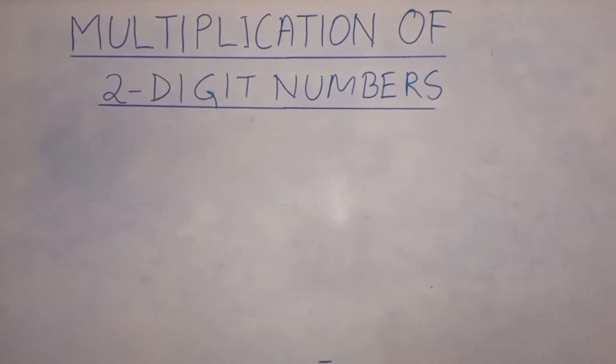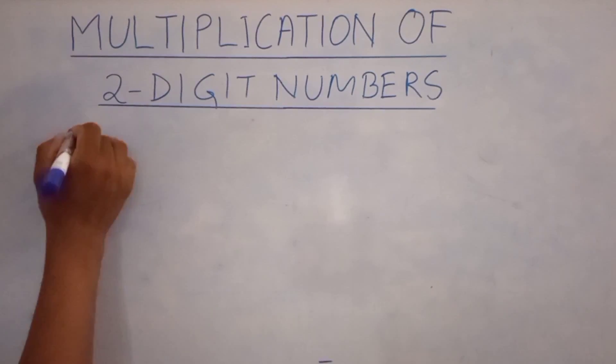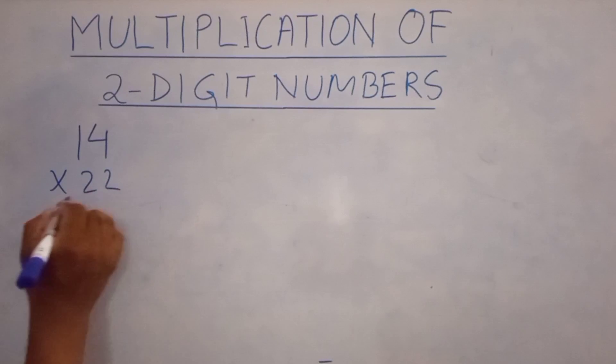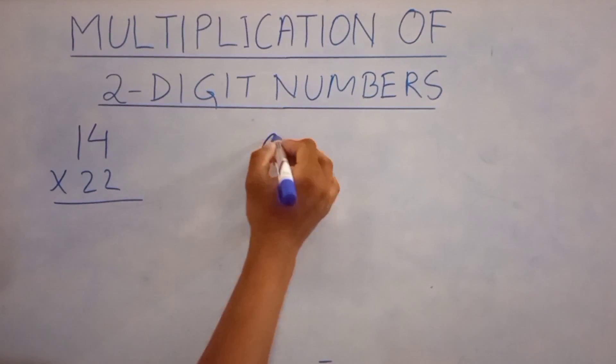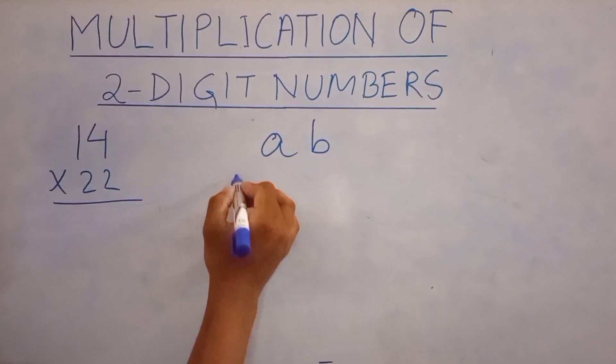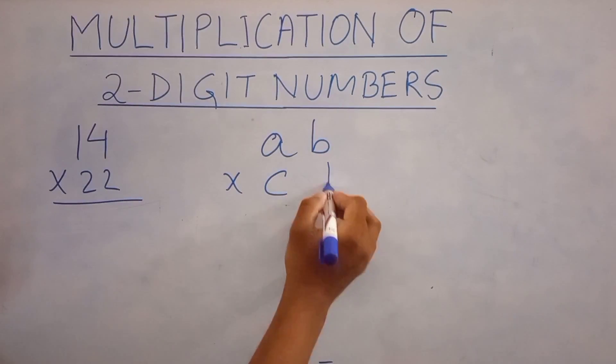So let's start with a basic but very effective method of multiplying two-digit numbers. Let's take an example: 14 × 22. So in order to do this multiplication we need to follow a certain pattern which looks similar to this multiplication: AB × CD.